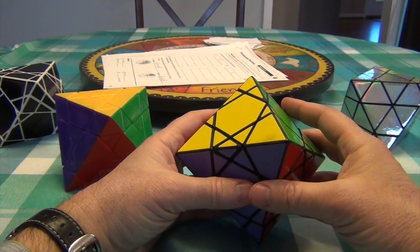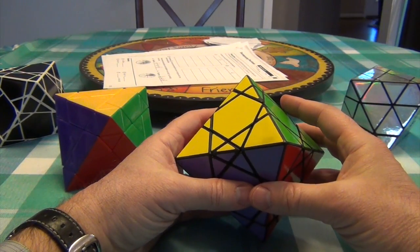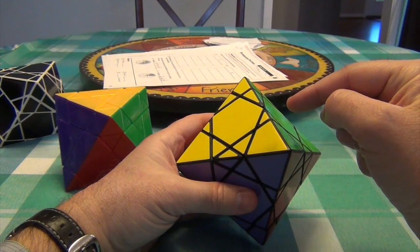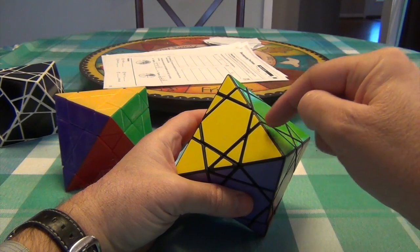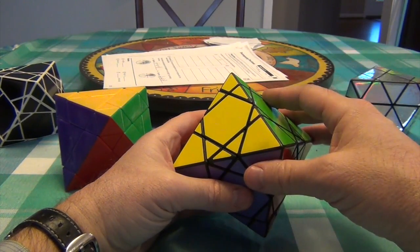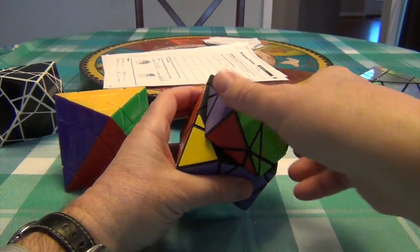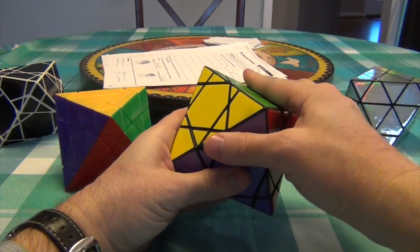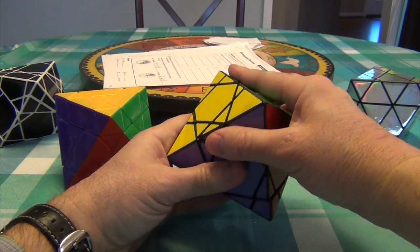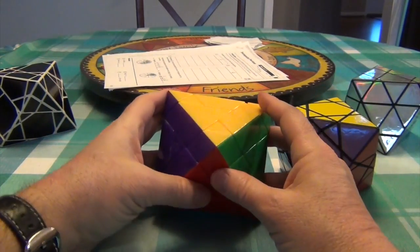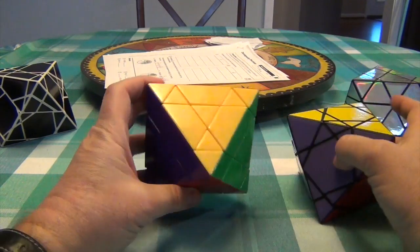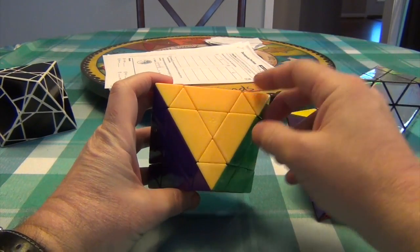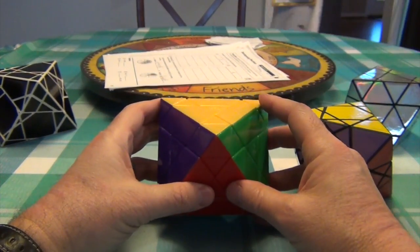So without any further ado, why don't we go into the scramble with this. But the difference also that you're going to find with this puzzle is the fact that the center is rotated. Well, the center has specificity. So this is actually a super cube version of this. So this is a super octahedron, basically. Now, as you recall, from time to time, I might have to do center rotation.